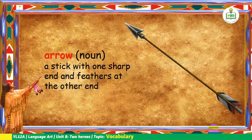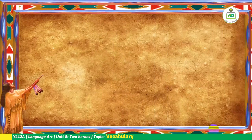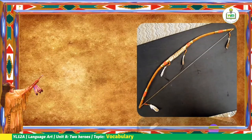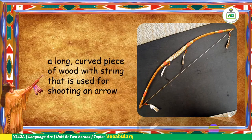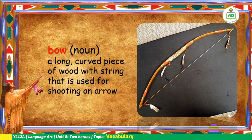Actually the next picture will be its partner. So that is what you call — can you guess what kind of object that is? That is a long curved piece of wood with string that is used for shooting an arrow. So that is a bow, and it is a noun. So when you combine these two objects together, we call them bow and arrow.